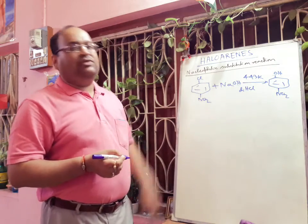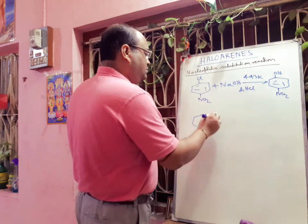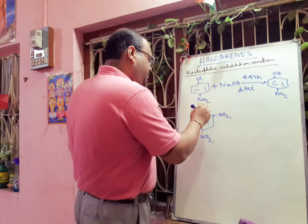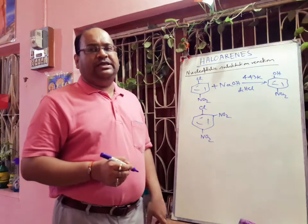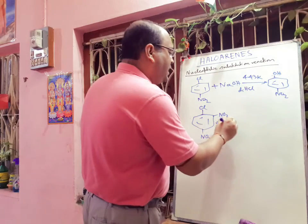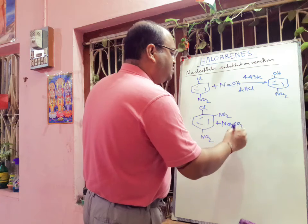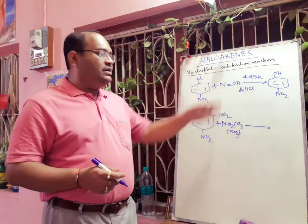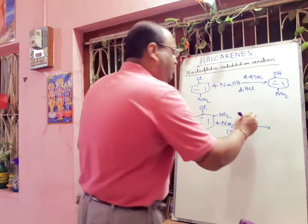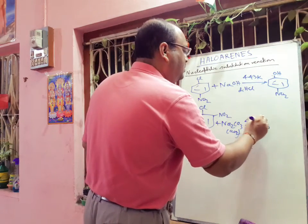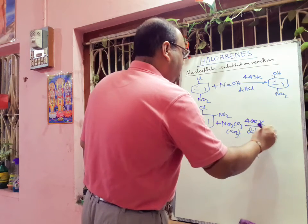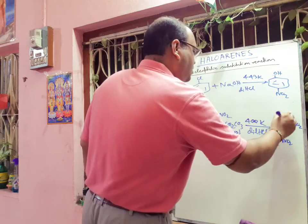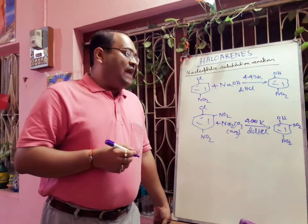If we add another nitro group at the ortho position to get 2,4-dinitrochlorobenzene, and add aqueous sodium carbonate — a milder base — at just 400 Kelvin, followed by dilute HCl, we get 2,4-dinitrophenol. So the conditions required are milder with two nitro groups.